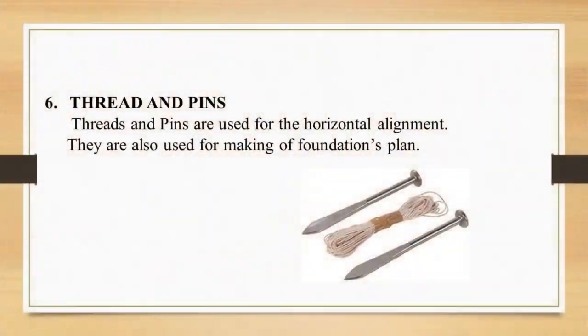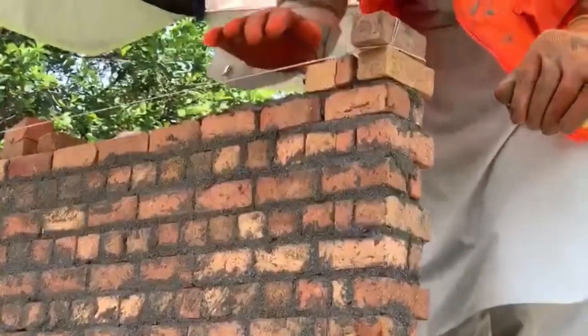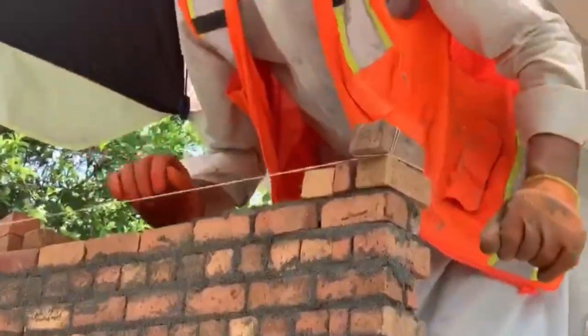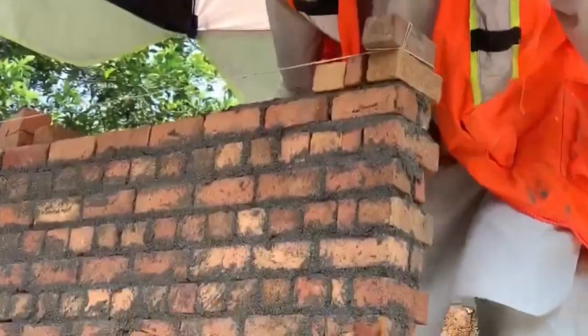Tool number six is threads and pins. Threads and pins are used for horizontal alignments only and are used for making foundation plans. In this video you can see that they are used only for horizontal alignments.